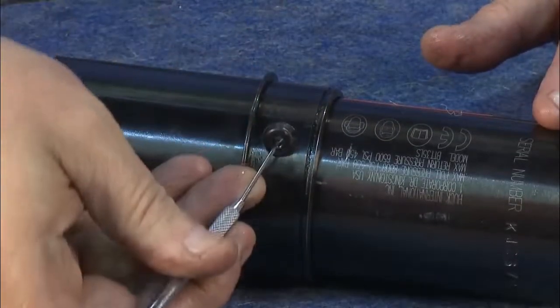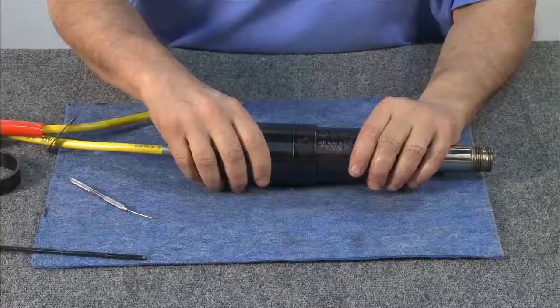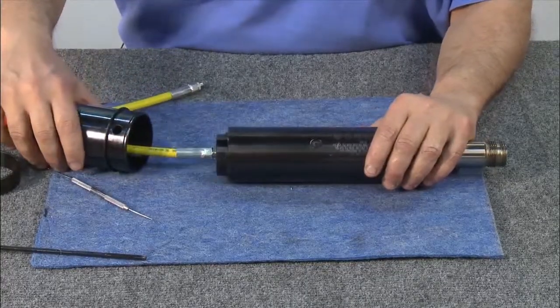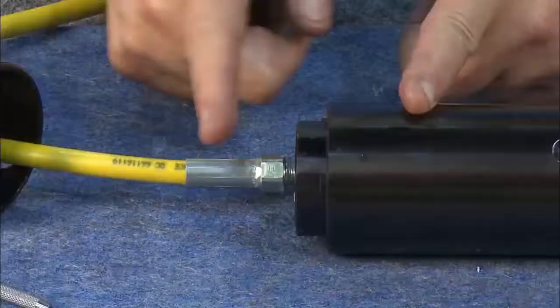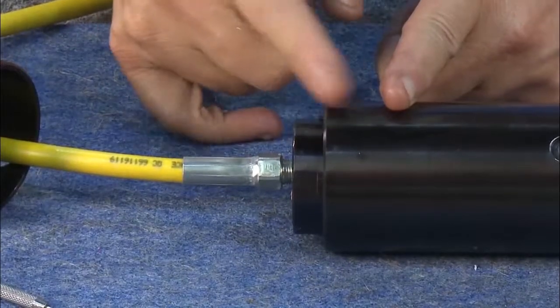Then, remove the locator buttons. Next, slide the shroud off the back of the tool. Remember, the shroud is designed to protect the user from seal leakage.